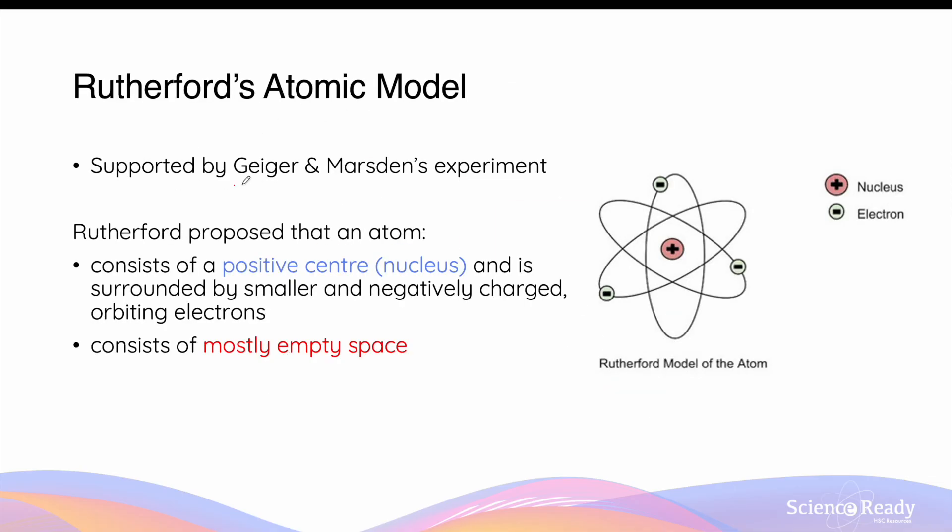Rutherford's atomic model is supported by Geiger and Marsden's gold foil experiment. In this model, Rutherford proposed that an atom consists of a positive center, which is known as a nucleus, and this center has a highly concentrated positive charge. The nucleus is surrounded by much smaller and negatively charged electrons, and additionally, the atom consists of mostly empty space.